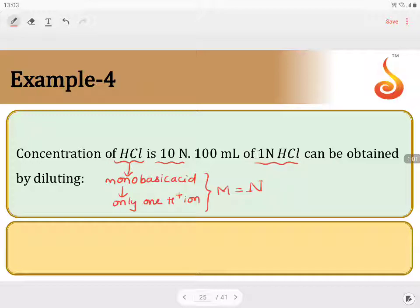Now if I want to dilute this, they have given 100 mL of 1 molar HCl can be obtained by diluting. How much dilution we need to get 100 mL of 1 normal HCl from 10 normal HCl?